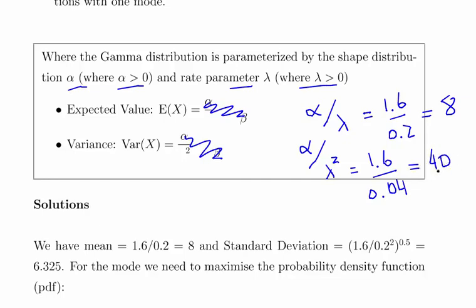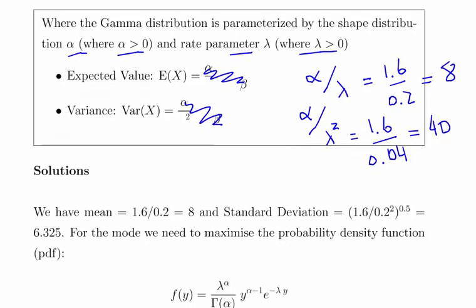The standard deviation is the square root of 40, which is 6.325. So those are two parts of what we need: the mean and standard deviation. We also need to calculate the mode, and to find the mode we need to maximize the probability density function.